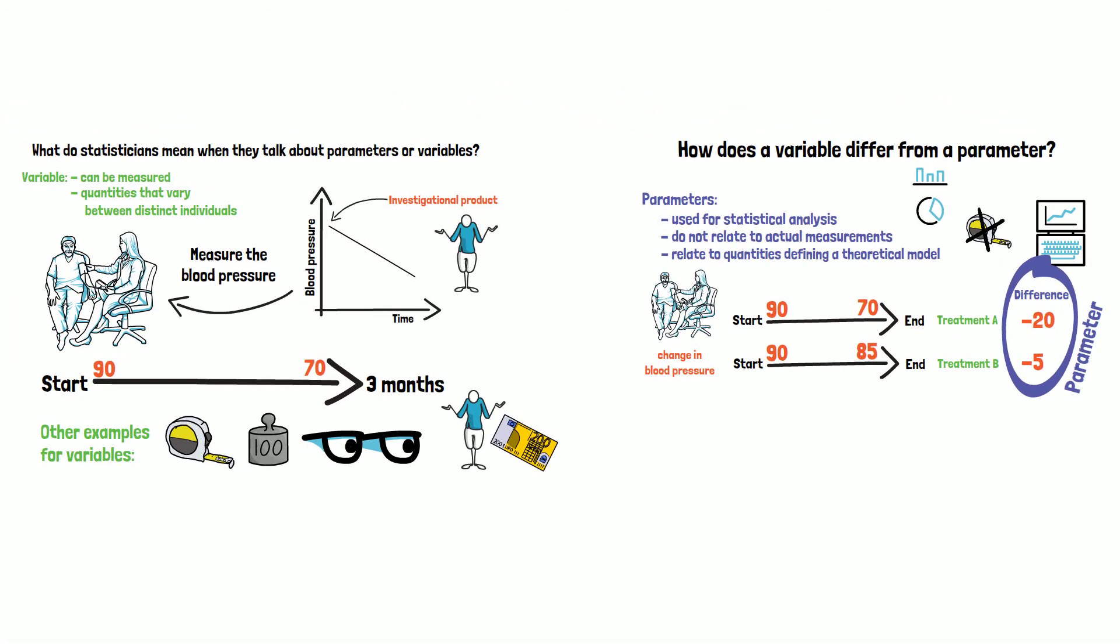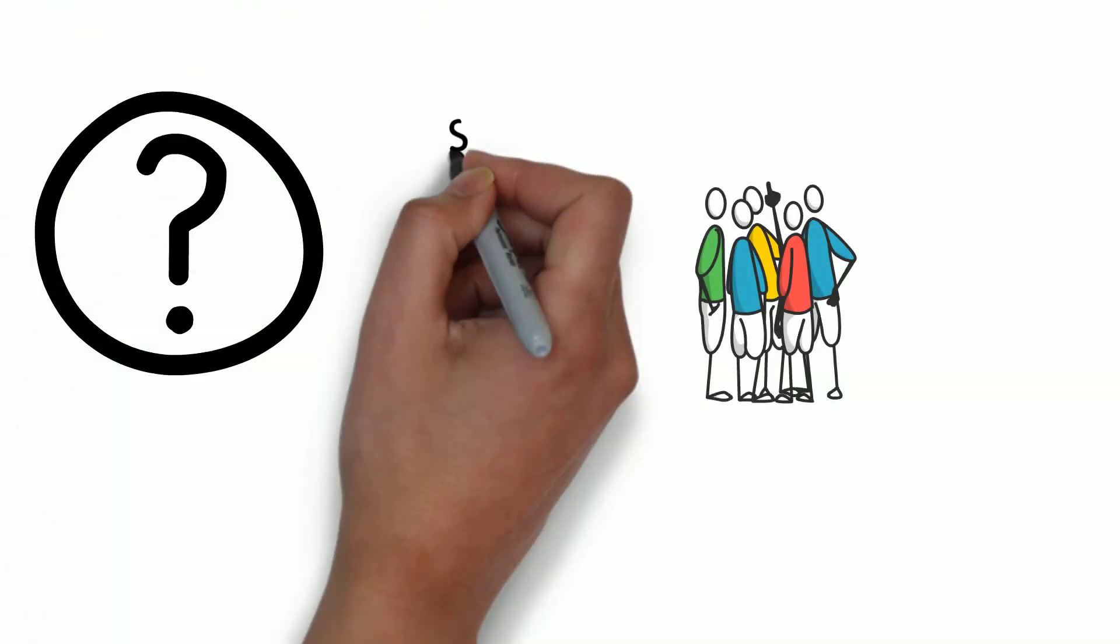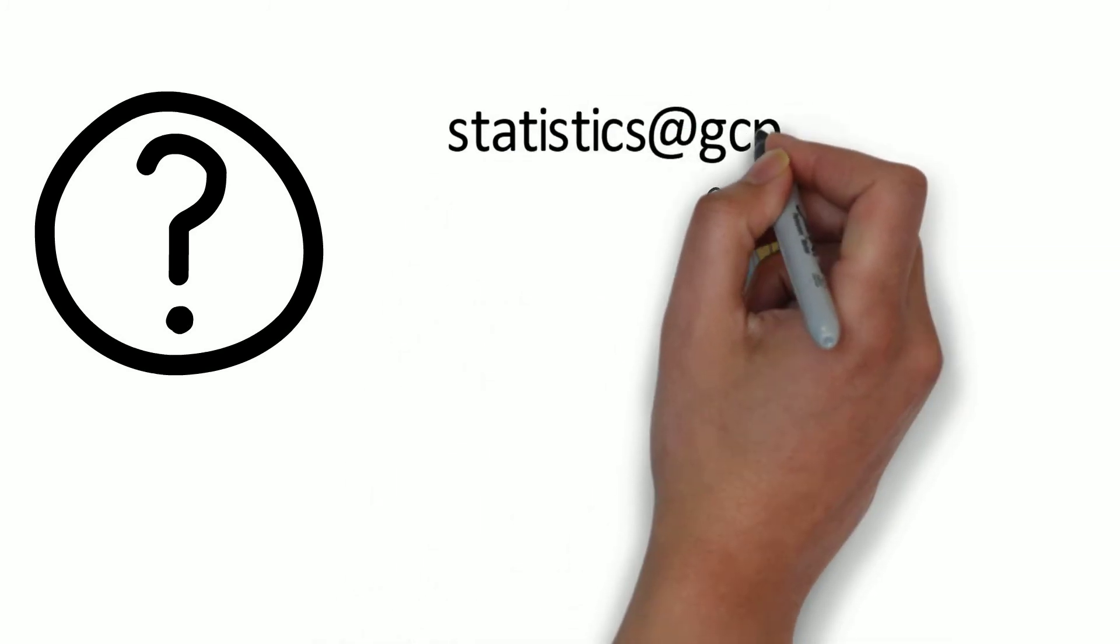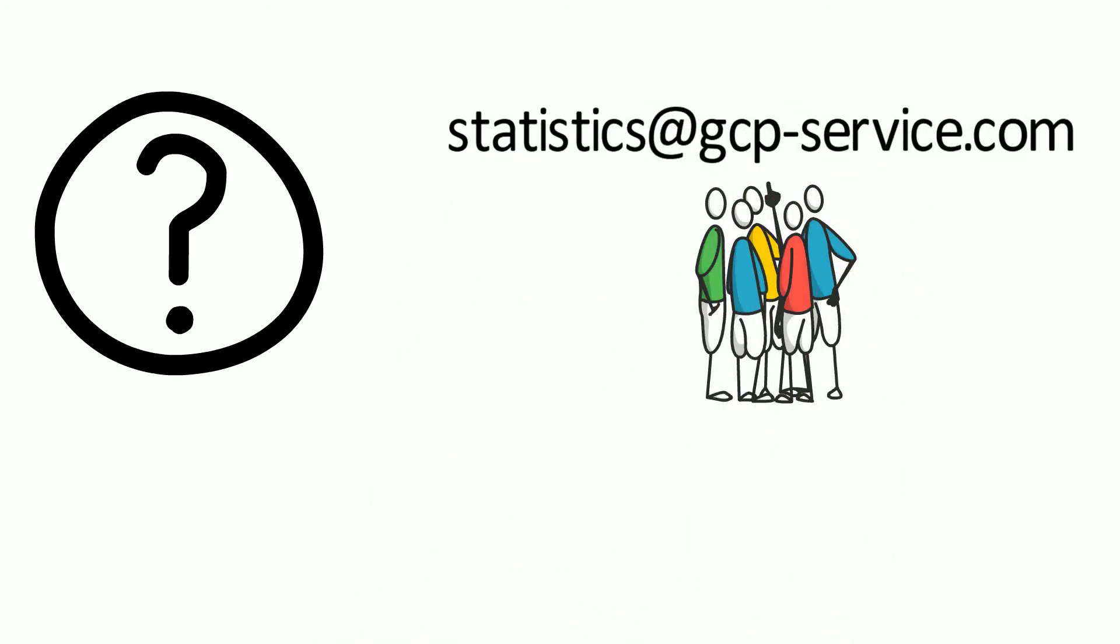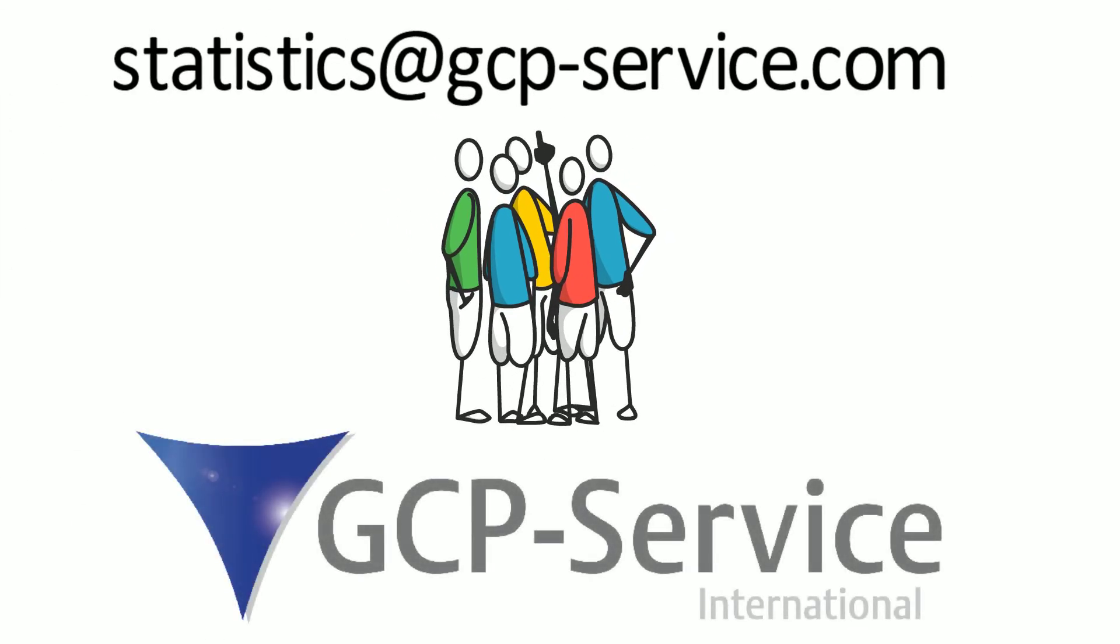So that is it for today. As you can see, variables and parameters can be distinguished easily. If there are any additional questions, our team of statisticians is happy to help you out. Leave us a message at statistics@gcpservice.com or leave a comment below. If you are significantly satisfied with the content, make sure to subscribe to not miss the next video.